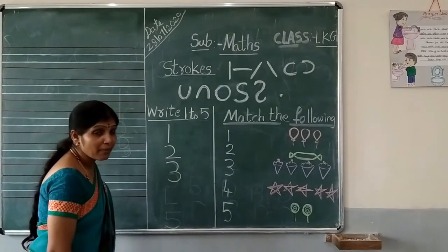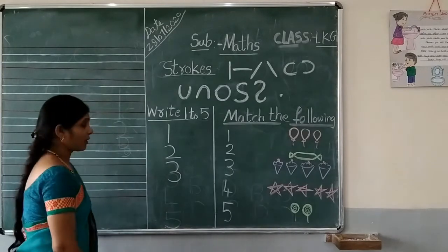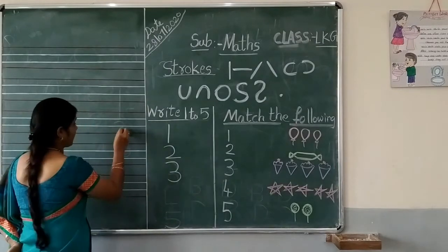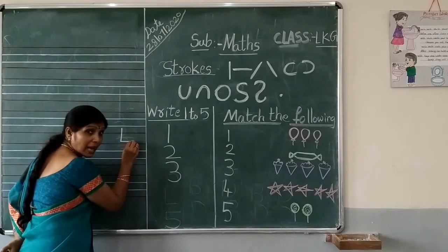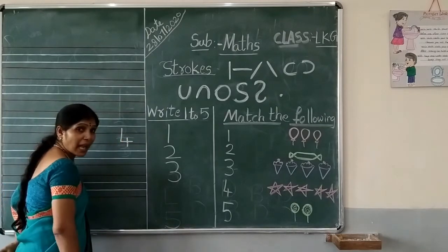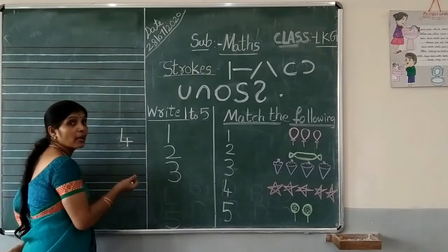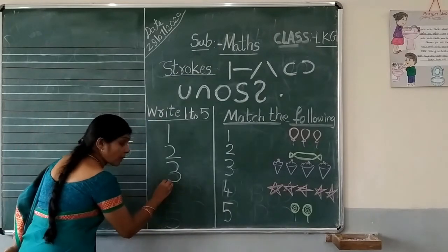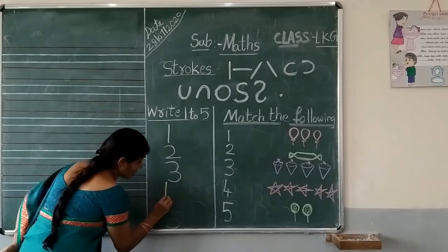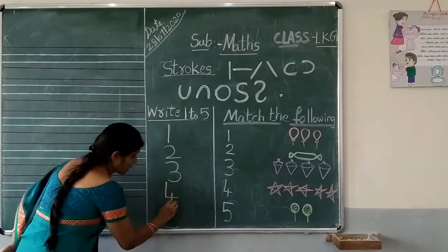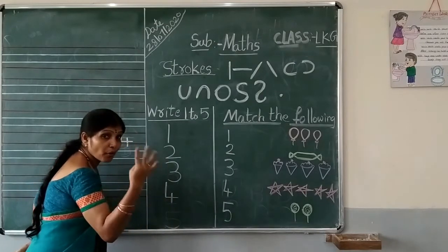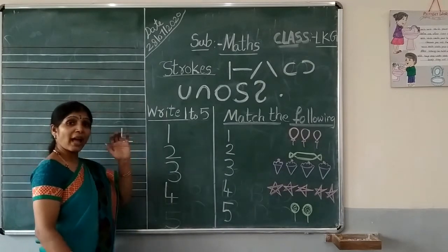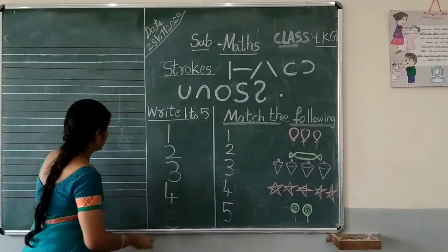Each time you should come. Yes, number 4. Come on children, let's try number 4. One standing line, one sleeping line, and one small standing line. Number 4. Which number? Number 4. Come on children, let's try number 4. 4 after number 5. Come on children, let's try number 5.